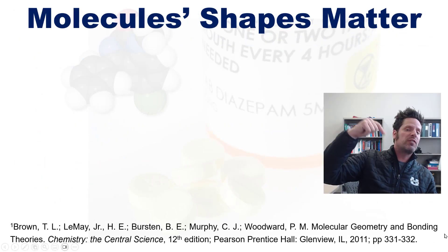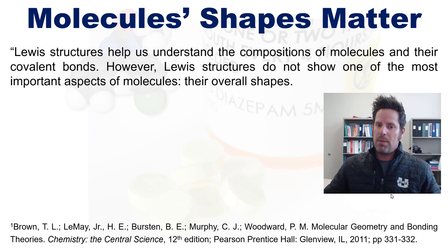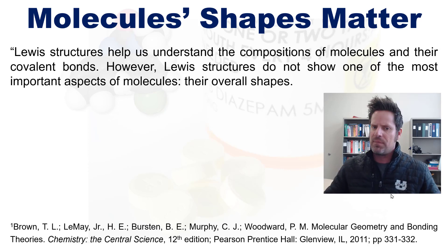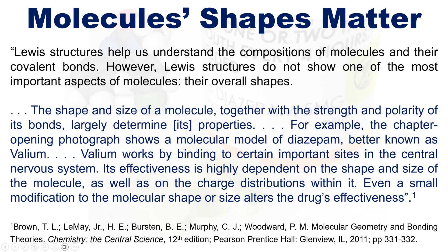Taken directly from our textbook which is referenced in the description below we learned the following quote: Lewis structures help us understand the compositions of molecules and their covalent bonds. However, Lewis structures do not show one of the most important aspects of molecules, their overall shapes. The shape and size of a molecule together with the strength and polarity of its bonds largely determine its properties.